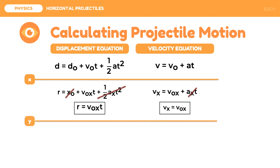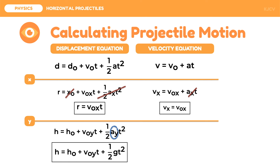Let us now look at the y component. For the displacement equation: h = h₀ + v₀ᵧ·t + ½·aᵧ·t². We use h because the displacement covered in the y component is the height of the projectile. For horizontal projectiles, h₀ is zero; however, when a projectile is not launched horizontally, the height of release is not always zero, so we will not omit it. Since acceleration at y is simply gravity, we have: h = h₀ + v₀ᵧ·t + ½·g·t².